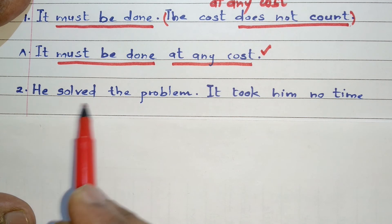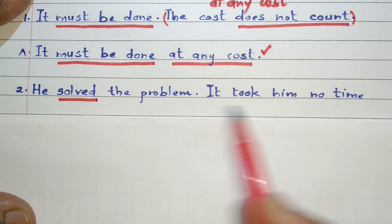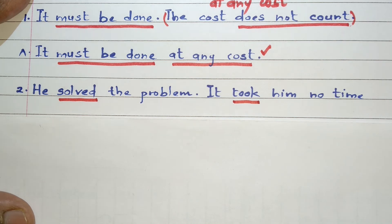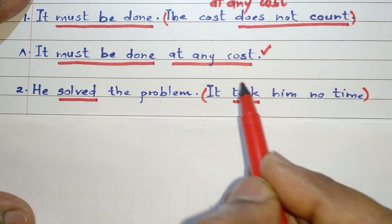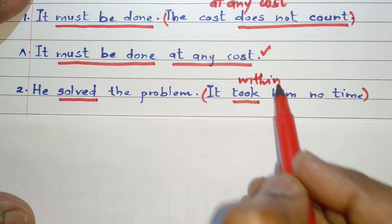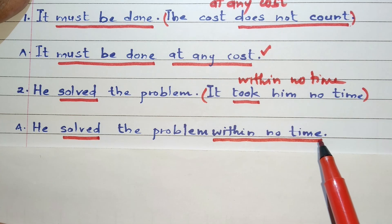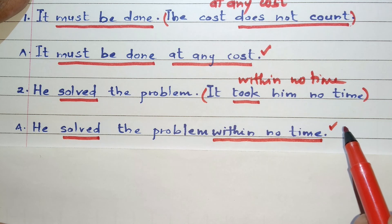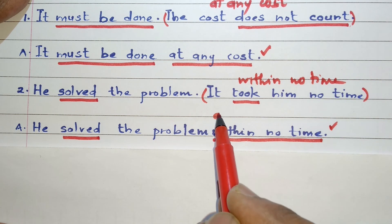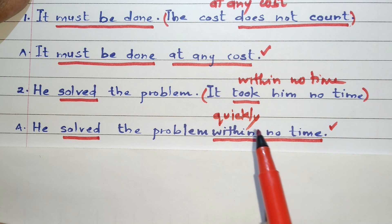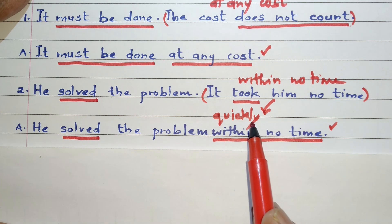Next example: He solved the problem. It took him no time. In the first sentence, 'solved' is the finite verb. In the second sentence, 'took' is the finite verb. We can eliminate the entire second sentence, and so the finite verb 'took' will also go. We replace it with the adverbial phrase 'within no time.' Remember, instead of 'within no time,' you can also say 'quickly,' using the adverb quickly. So we can also say: he solved the problem quickly. This is equally correct.